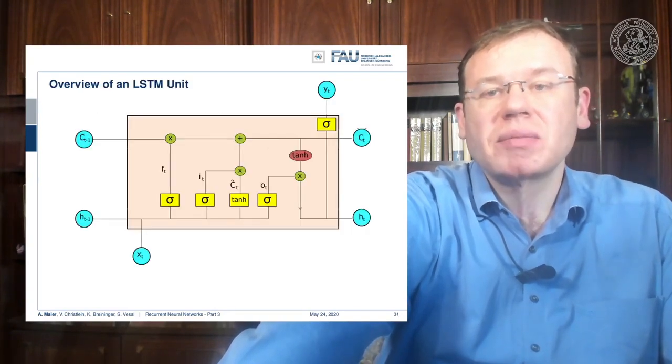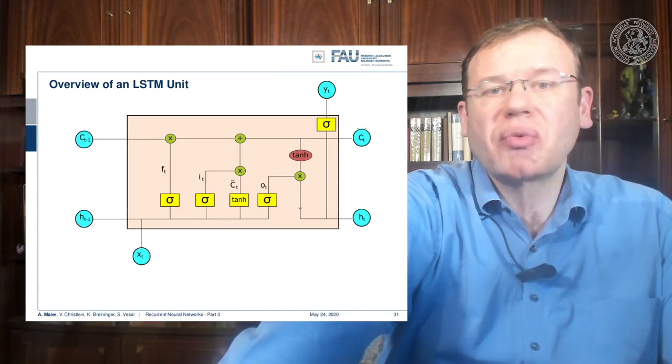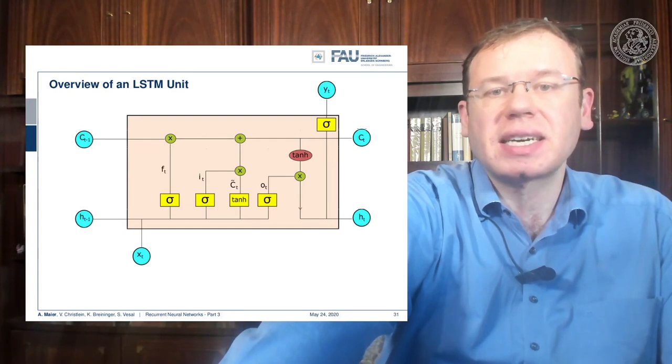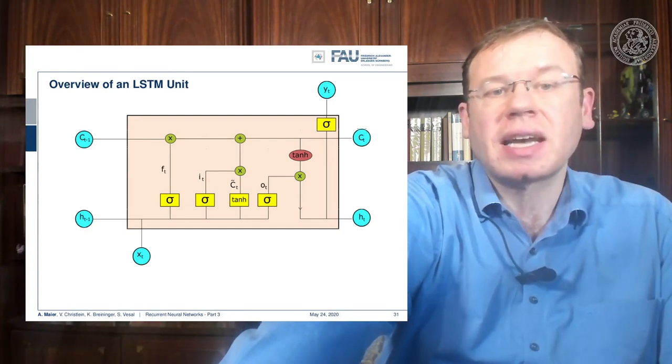So let's have a look into the LSTM unit. You see here one main feature is that we now have essentially two things that could be considered as a hidden state: we have the cell state C and we have the hidden state H.